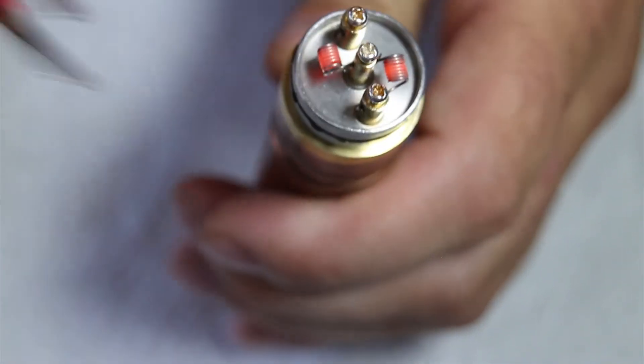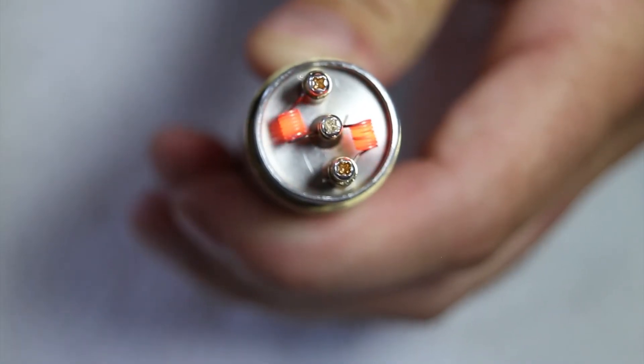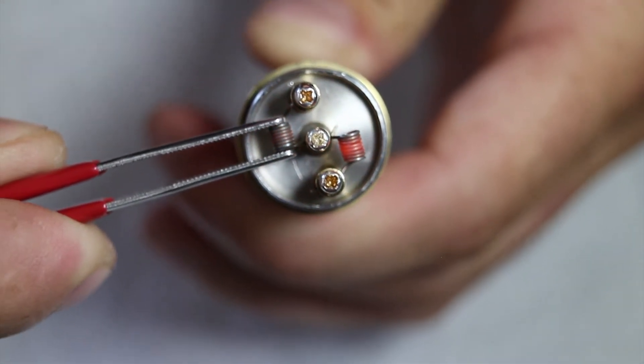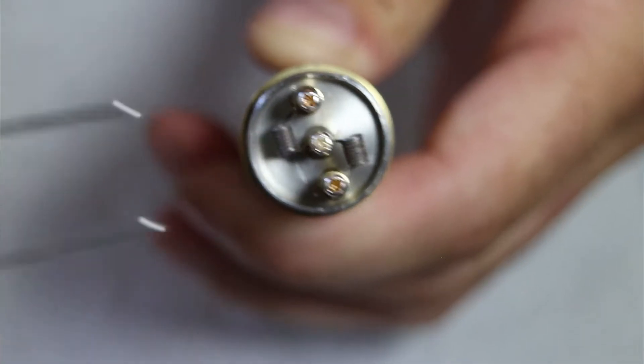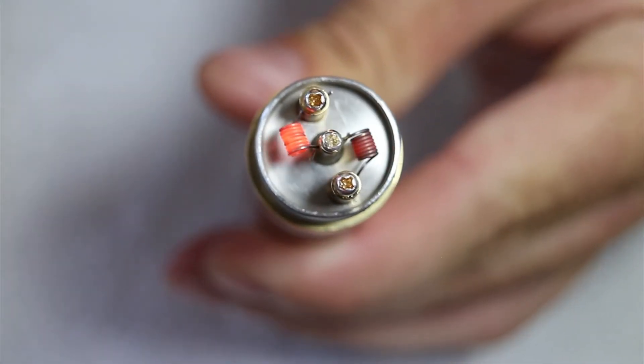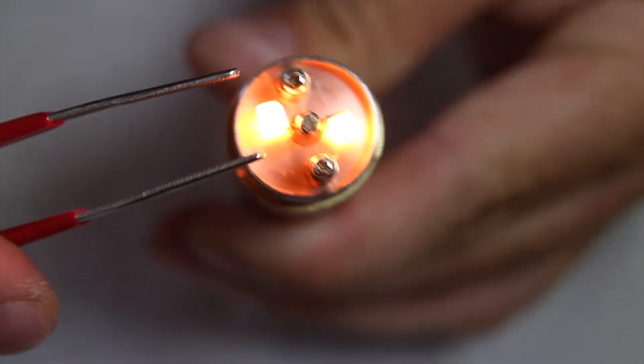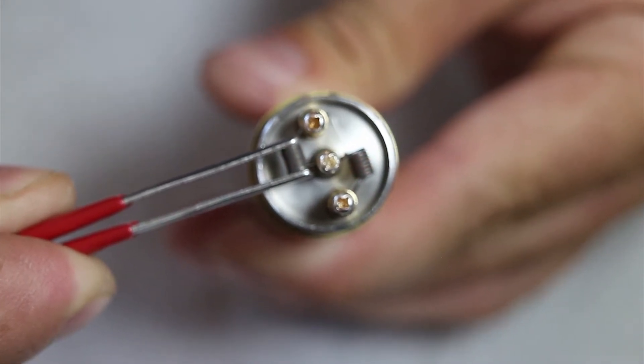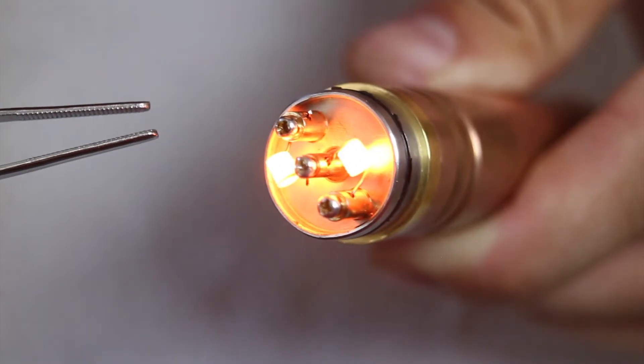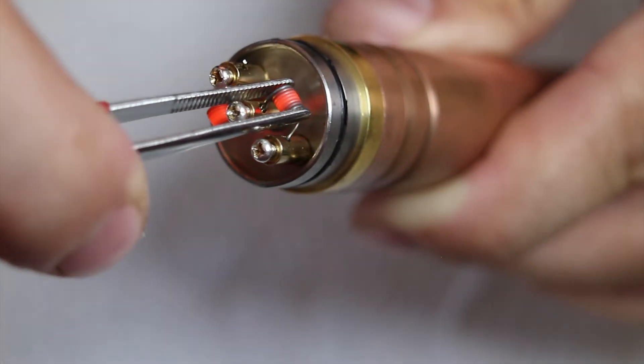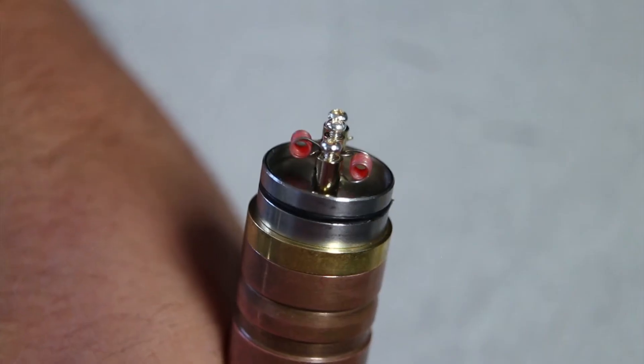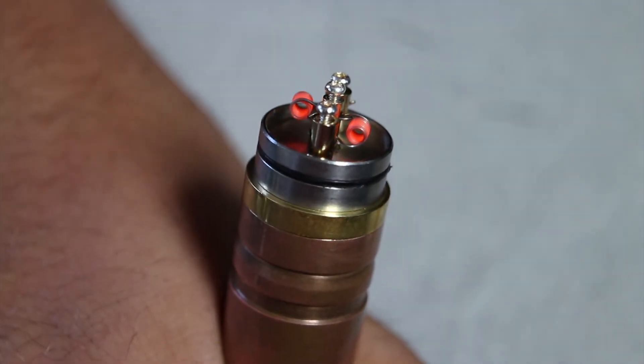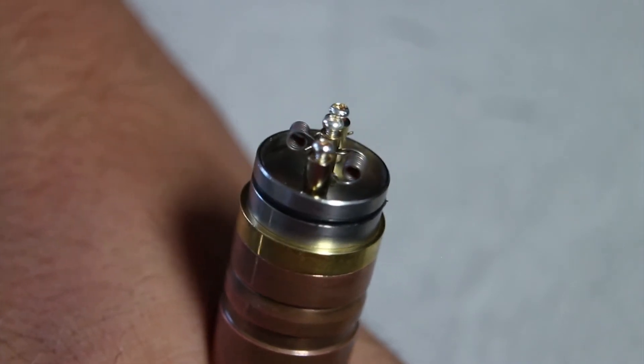So now we're just going to pulse fire it until they start glowing from the middle out. So they're already looking pretty good so that's a good sign. And now we're going to just take our tweezers and squish those coils together. Alright, we are looking good. Let's give it some wick, some juice and have a vape.